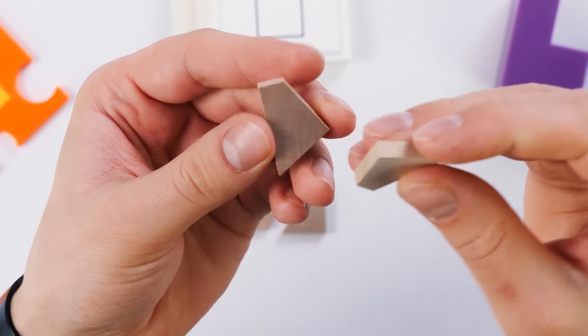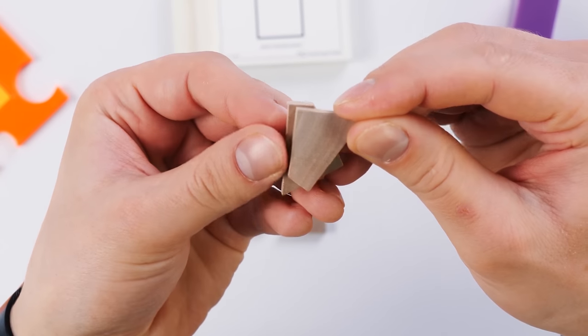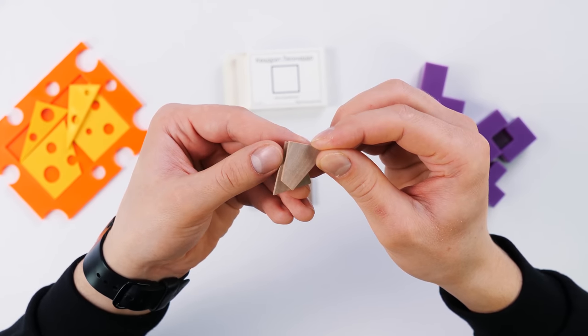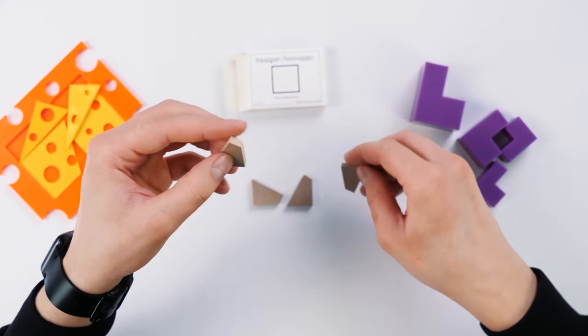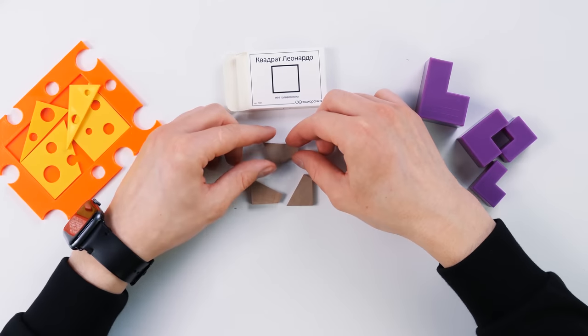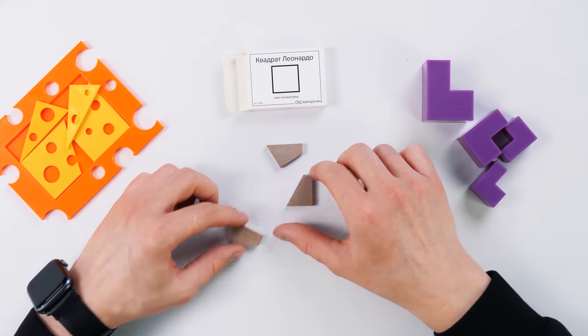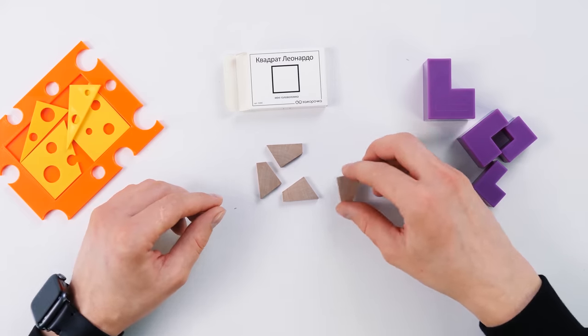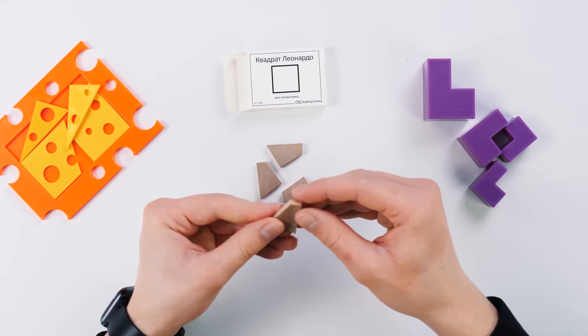And this angle here has 90 degrees. By the way, let's compare it with this part of the detail. Here is 90 degrees too. So, we will try to place these parts in the corner. Okay, here we go. At the same time, I'm trying to put them symmetrically. And like this. Put it all together, whether we get it or not.